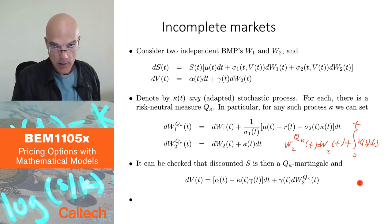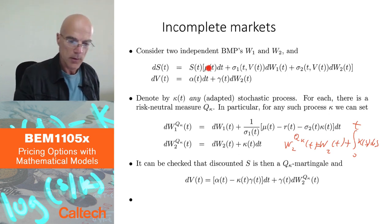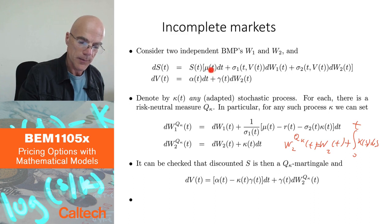All I want to do is to make my discounted stock price a martingale, which means I want to replace mu by r here. Now, if you plug this dW1 here, sigma_1 and sigma_1 will cancel, mu and mu will cancel.